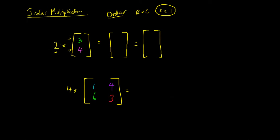So for instance we have this number 2, and we have a first row, first column with the term 3. If we multiply this matrix by 2, the resulting matrix is going to have a first term which is 2 multiplied by 3. Our next term is going to be 2 multiplied by 4. So we just multiply everything by 2: 3 multiplied by 2 and 4 multiplied by 2.